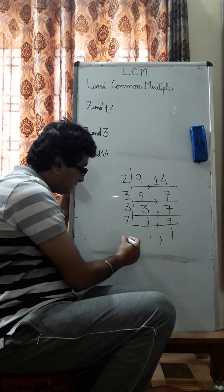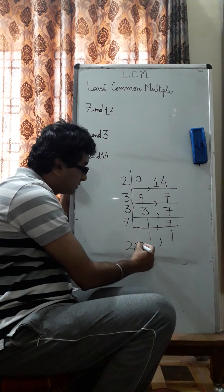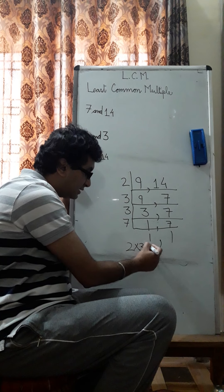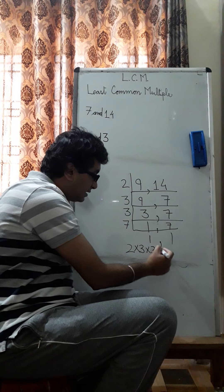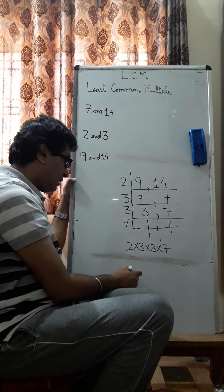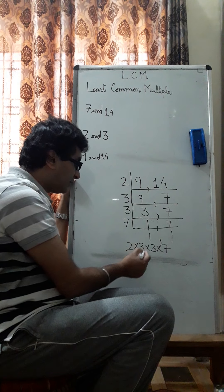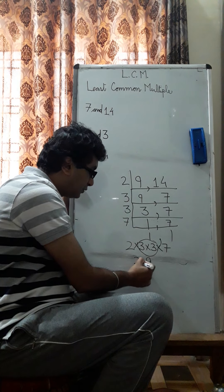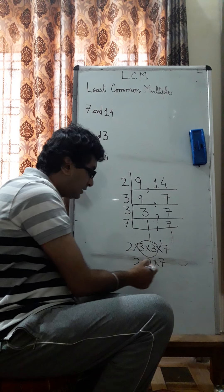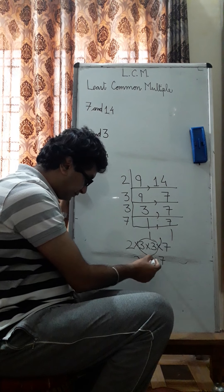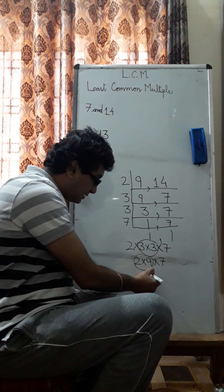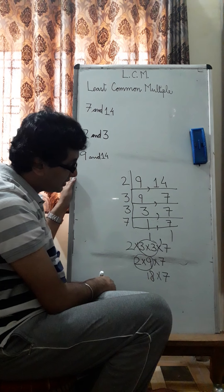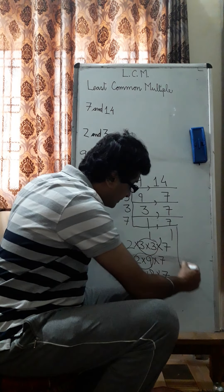So what will be the LCM? 2 into 3. Now you cannot say because 3 is there common you cannot leave out 1, 3. You have to put both the 3s. 2 into 3 into 3 into 7. Now, if I were you, what will I do? I will first multiply this. 3 into 3 is 9. So 2 into 9 into 7. Then, what would I do? I would multiply this. 9 to the 18. And then 18 into 7.